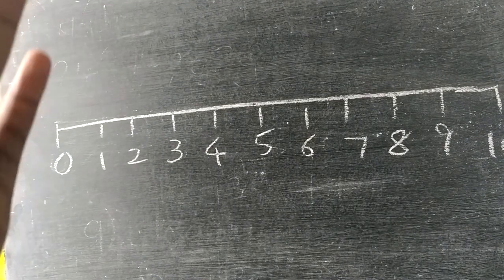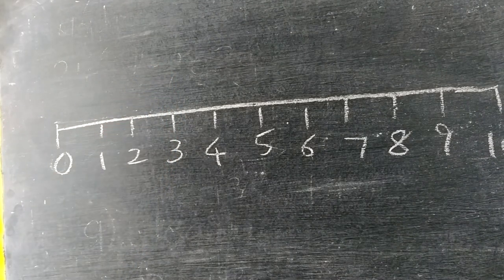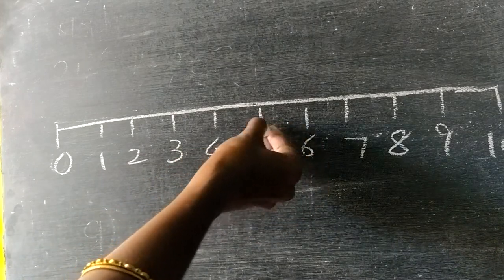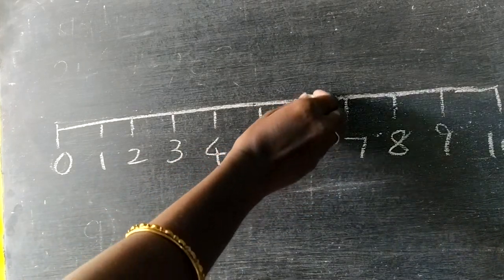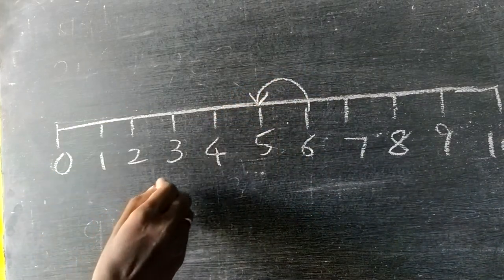Before means the number comes before, just before. Can you tell before 6 what comes? You have to see the left side. So before 6 what comes? 5.